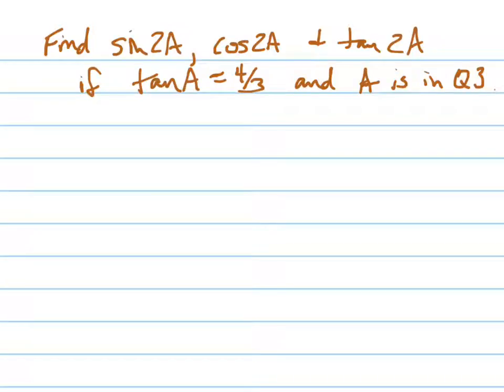All right, here's a problem where they want us to find the sine of 2A, the cosine of 2A, and the tangent of 2A, given that the tangent of A is equal to 4/3, and A is in the third quadrant. Well, that's kind of key information right there.